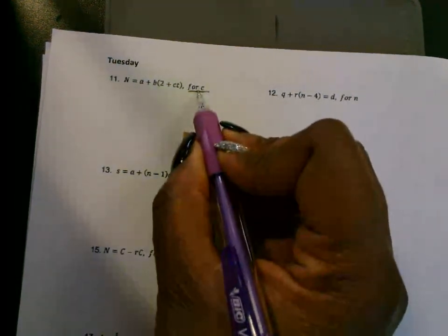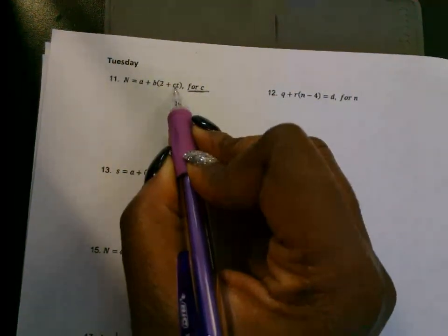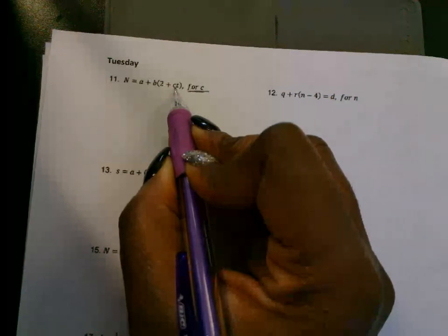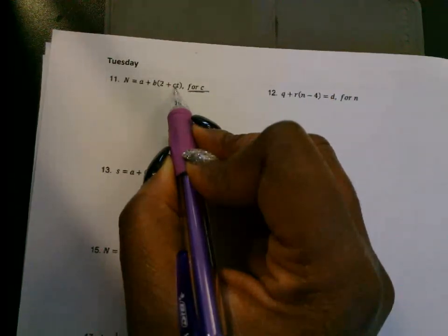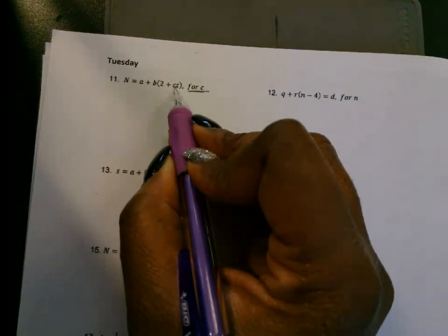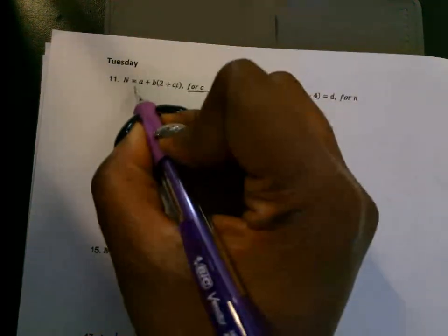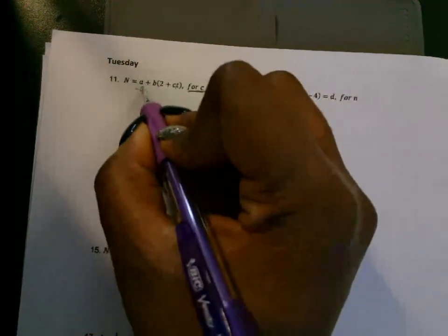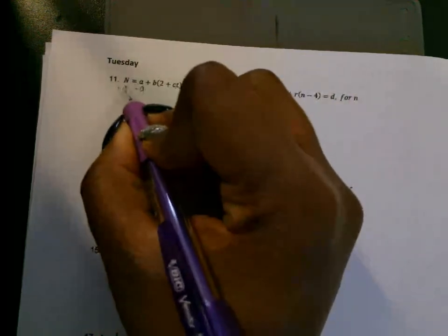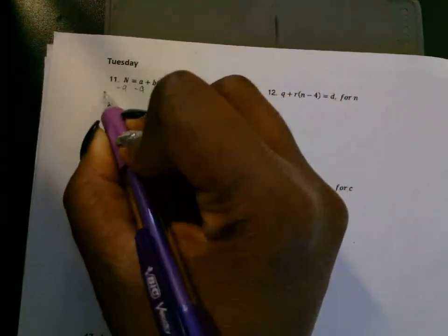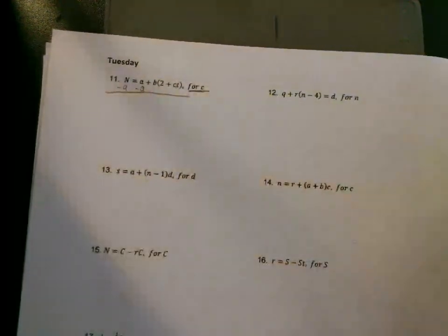We need to get C by itself. C is right here. First thing we need to get rid of that's on the same side as C — let's get rid of this A. So we are going to subtract the A, move the A. Get rid of anything that you can add or subtract first.